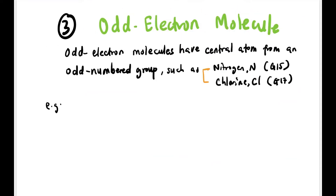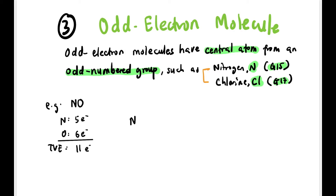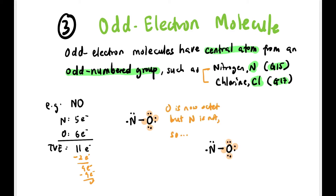The third exception is odd electron molecules, where the central atom comes from an odd-numbered group, such as nitrogen (Group 15) or chlorine (Group 17). For example, NO: N has 5 electrons, O has 6, total = 11. We draw one bond using 2 electrons, leaving 9. We distribute them — O becomes octet but N ends up with 7 electrons, which is odd.